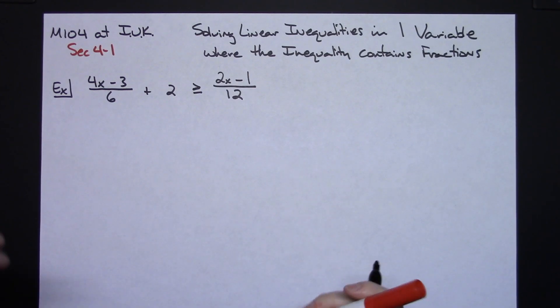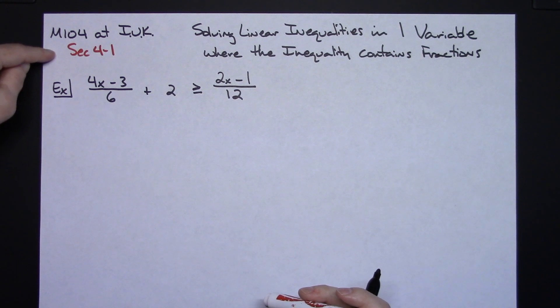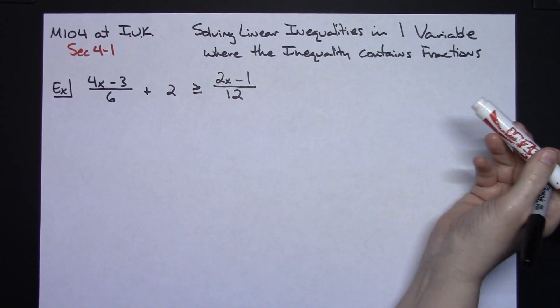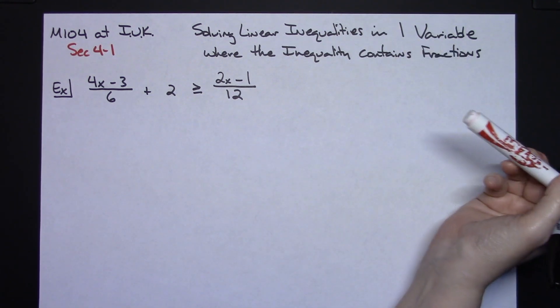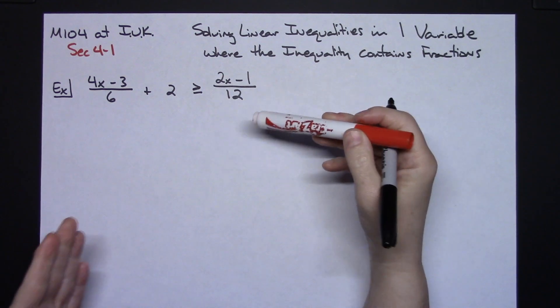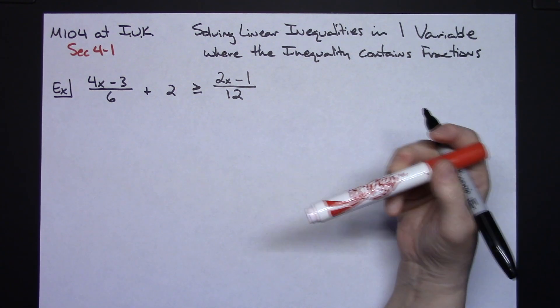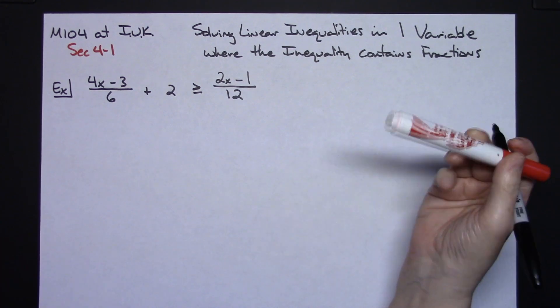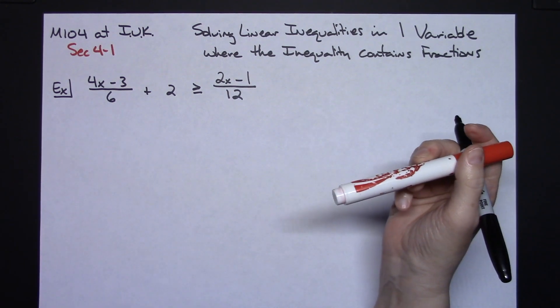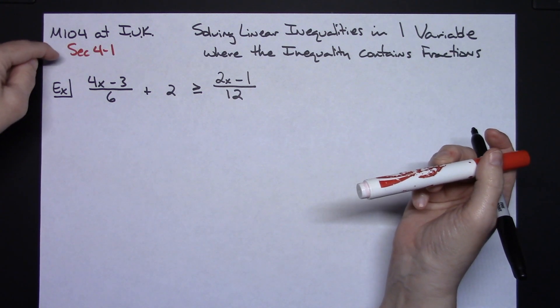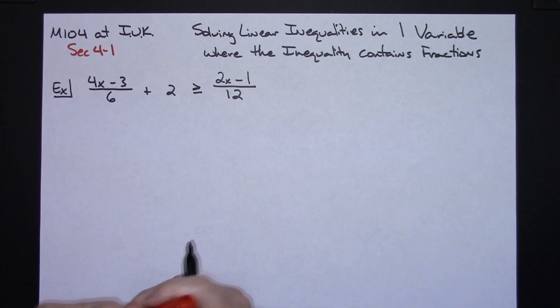In this video I'm going to be specifically making it for my M104 classes at IUK. We are going to be taking a look at how to solve a linear inequality in one variable, and specifically I'm doing this example because it contains fractions. It's not just a straight, nice, easy little inequality that you're going to be able to solve. It's going to have some fractions in there so it's going to have extra steps. It will be content that is coming from section 4-1.